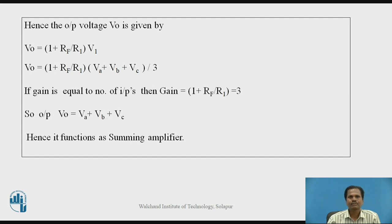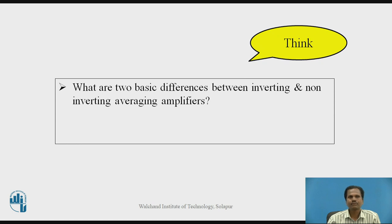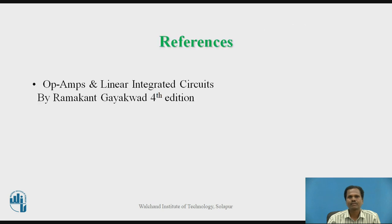If the gain is set to 1, the output voltage equals V-A; if gain is set to 3, output voltage equals V-A plus V-B plus V-C. Students should consider: what are the two basic differences between inverting and non-inverting averaging amplifiers? In the inverting averaging amplifier, the output voltage is the average of all input voltages with opposite sign — there is a sign or phase reversal. In the non-inverting averaging amplifier, the voltage at the non-inverting input is the average of all input voltages V-A, V-B and V-C with no phase reversal. Thank you.